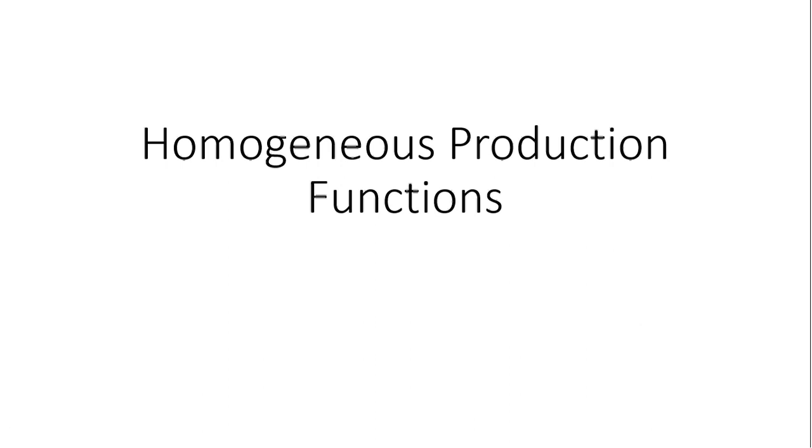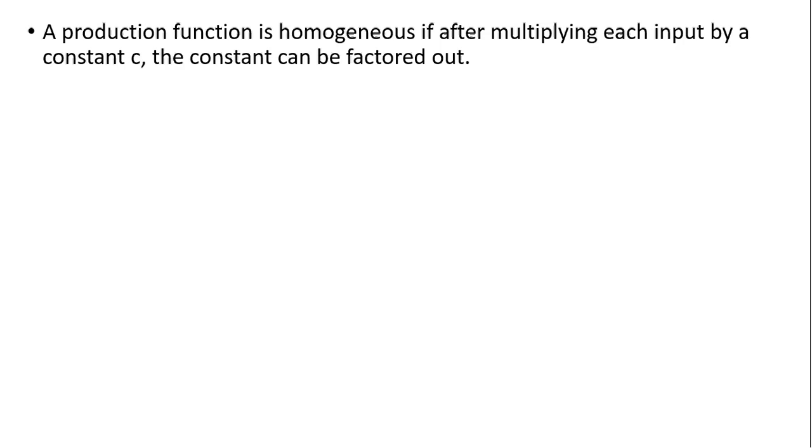In this video, we're going to study the homogeneity property of production functions. A production function is homogeneous if after multiplying each input by a constant C, the constant can be completely factored out.